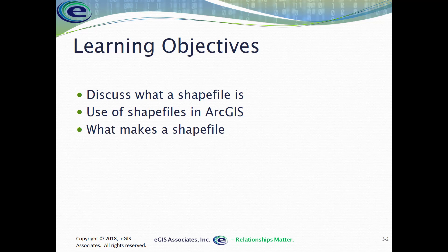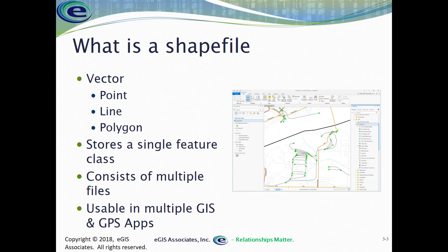So what is a shapefile? A shapefile stores vector data — that means it stores points, lines, or polygons. Shapefiles are set up to store a single feature class, meaning it's going to be a point shapefile, a line shapefile, or a polygon shapefile. Within a single shapefile, you cannot mix and match those feature types. It's got to be all one type.